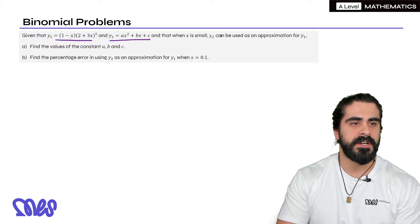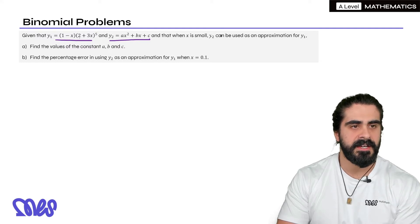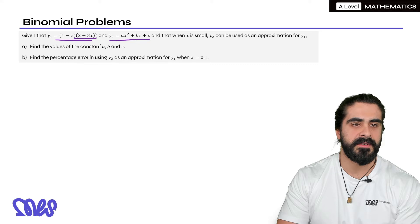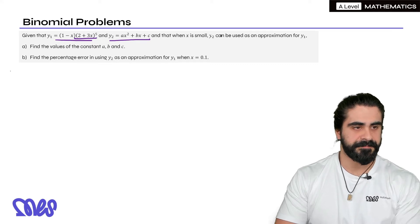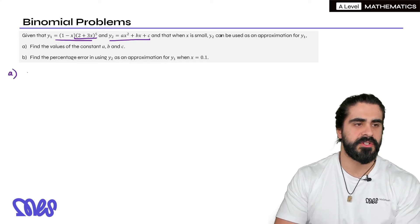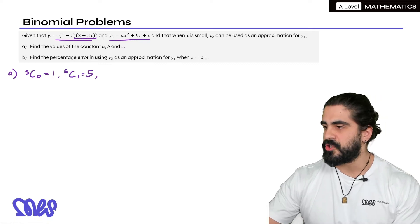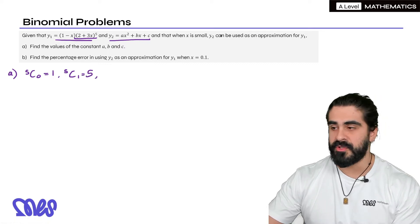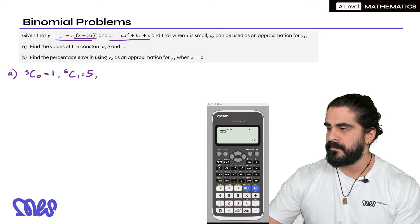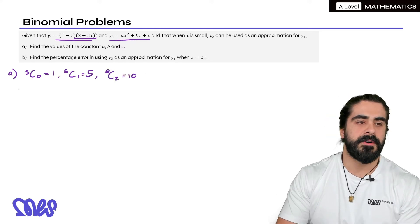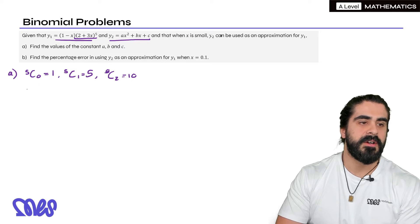Now the first bracket here is just 1 minus x so there's no expanding needed. But the second term is power 5, so we do need to expand that binomially. So we need the coefficients. We're going to write them down. We have 5 choose 0 which would be 1, 5 choose 1 which would be 5. Then we just need to double check what 5 choose 2 would be is 10.